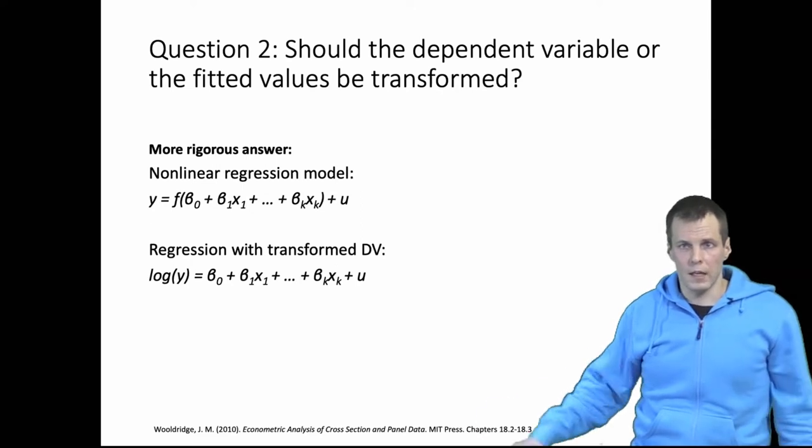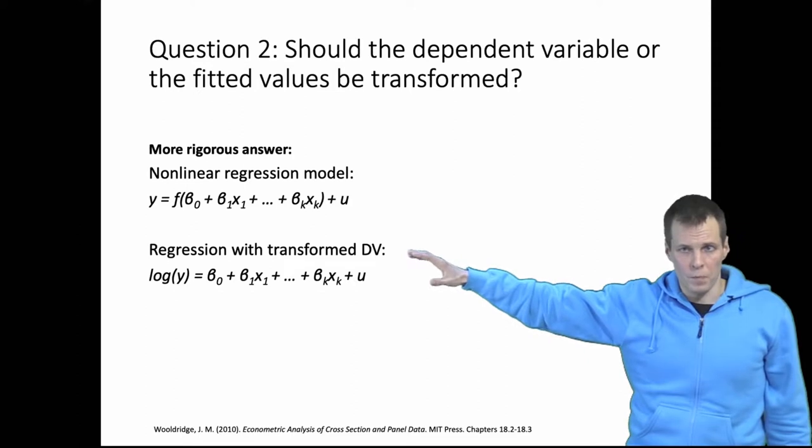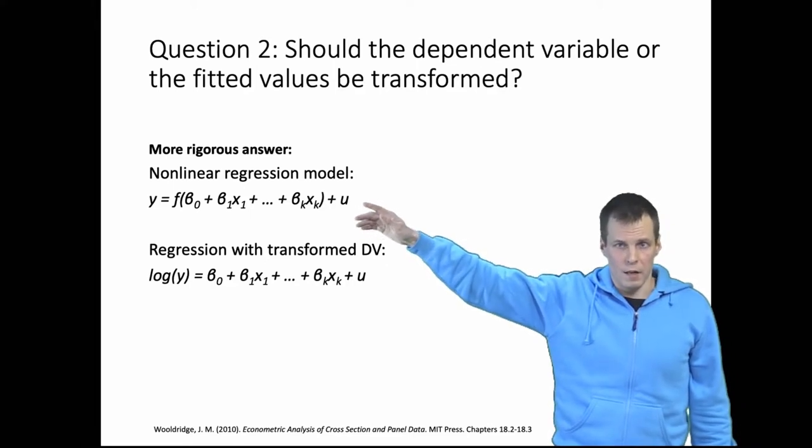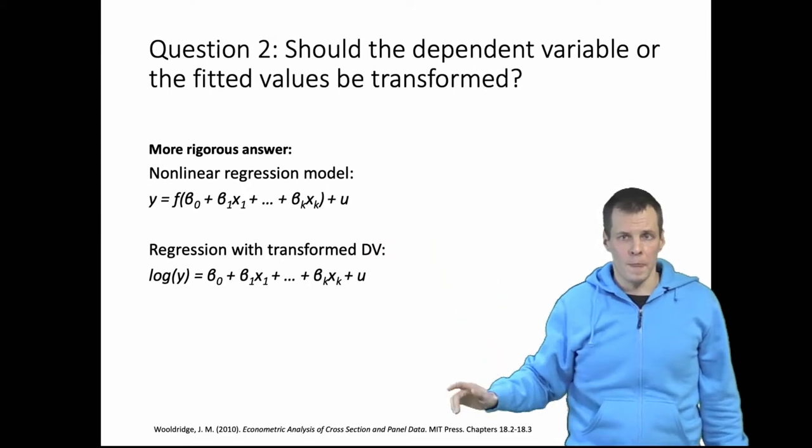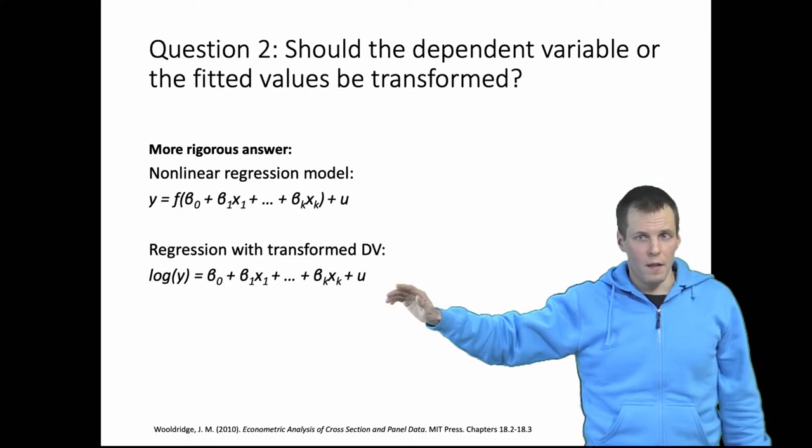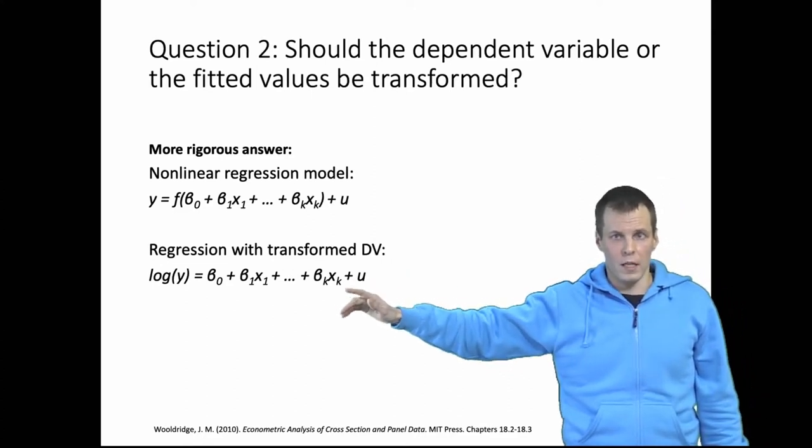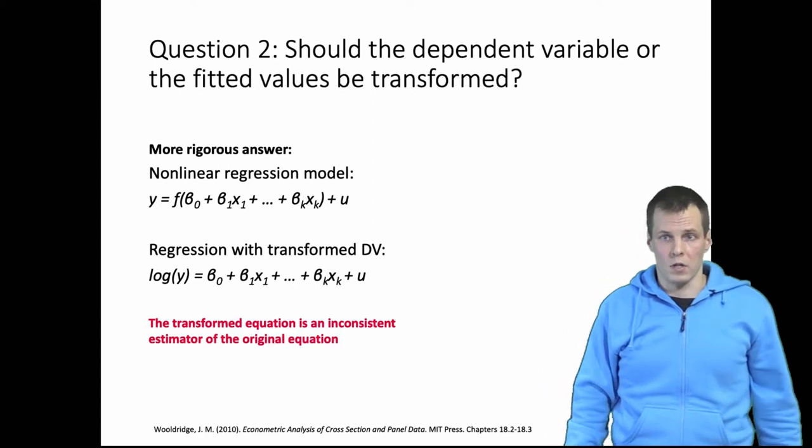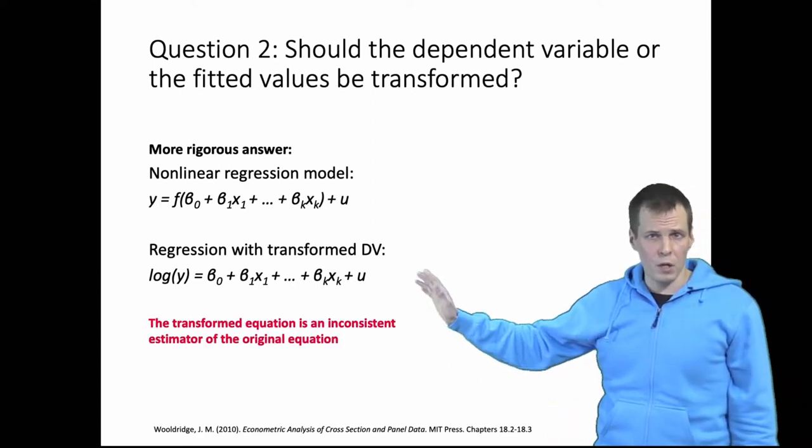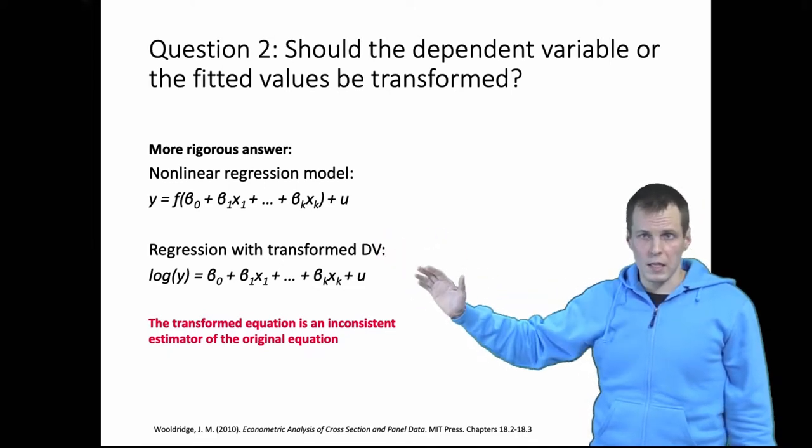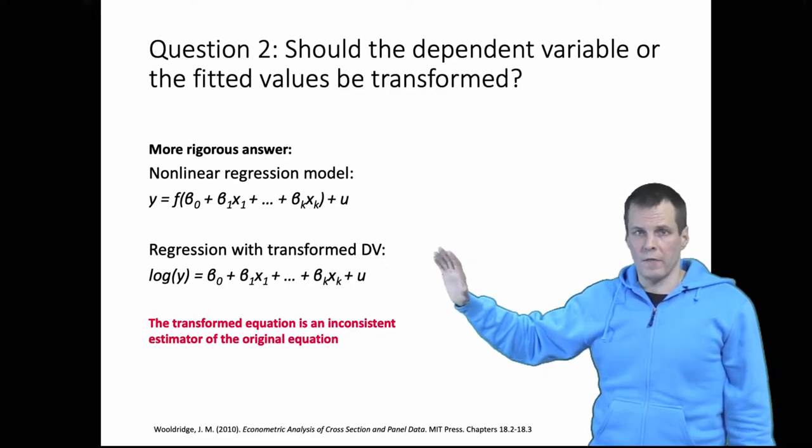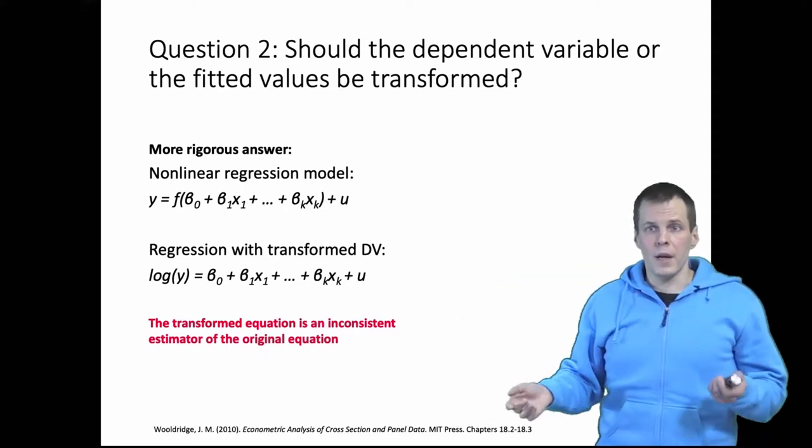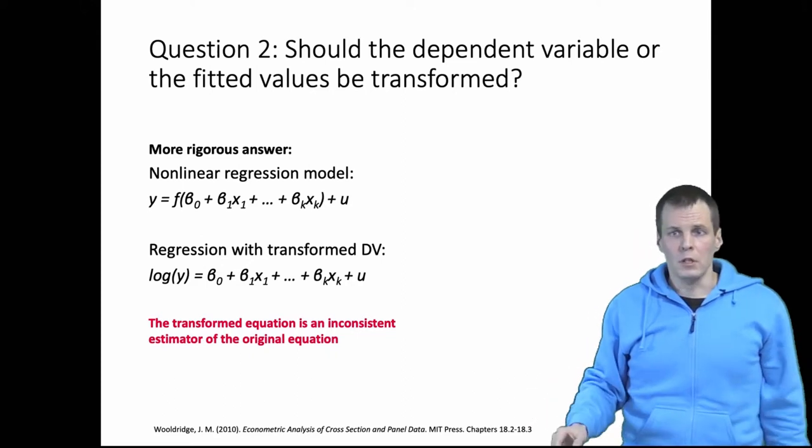So let's look at this GLM model and the transformed model. Typically we are interested in explaining what is the mean of the data or the expected value of the data given the independent variables, in which case we look at the non-linear regression model. If we apply this transformed dependent variable model and we treat these coefficients here as if they were estimates for this original model of interest, then they are actually inconsistent. So the transformed equation is an inconsistent estimator for the original equation. So statistically thinking you should never transform the dependent variable, you should always use the GLM because the transformed variable is inconsistent estimator of the GLM.